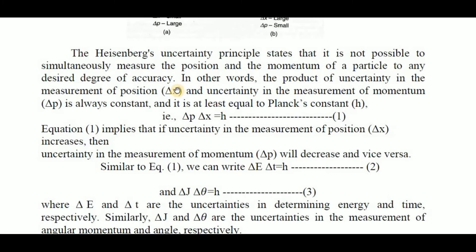Delta x can be written as the change in displacement — that means x2 minus x1 equals delta x. Delta p indicates the change in momentum — that means p2 minus p1. So the product of delta p and delta x equals Planck's constant h, which is 6.625 × 10⁻³⁴ joule-seconds. Equation 1 implies that if the uncertainty in position delta x increases, then the uncertainty in momentum delta p decreases, and vice versa — these two must balance each other.